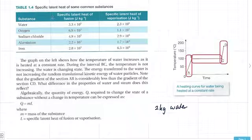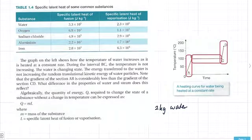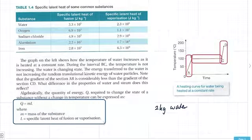Now, you can see in this table, table 1.4, we've got some different specific latent heats of fusion and of vaporization for different substances. And just to think about what this means, we've actually got a nice rule here, which tells us the quantity of energy required to change the state of a substance without a change in temperature, which is Q equals M times L.